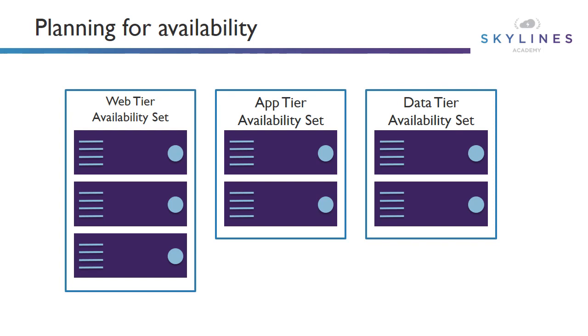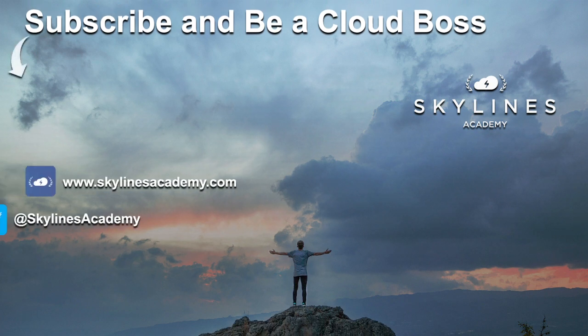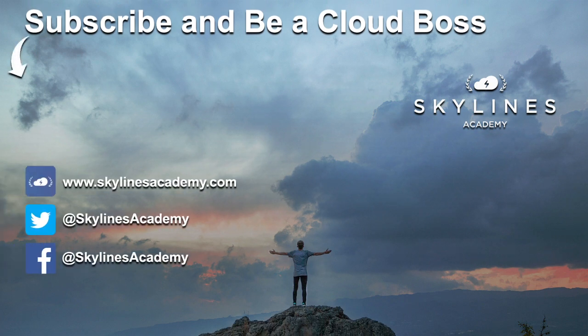Use this model whenever you're trying to decide what availability sets to use. There are definitely exam questions on this — they'll give you scenarios describing some number of web servers, app servers, and data servers, and you have to decide how to group the servers. We'll see you in the next one.